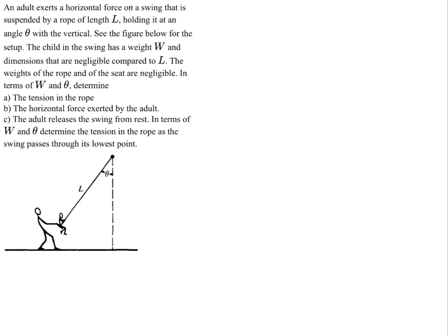An adult exerts a horizontal force on a swing that is suspended by a rope of length L, holding it at an angle theta with the vertical, as shown in the figure. The child on the swing has a weight W, and dimensions that are negligible compared to the length of the swing L. The weights of the rope and of the seat are negligible.